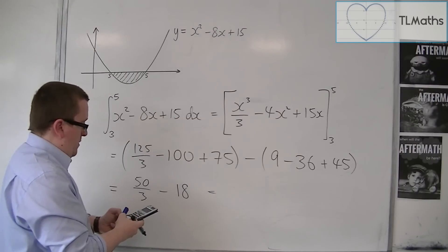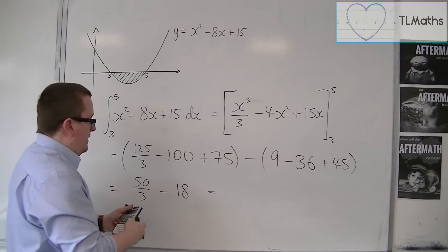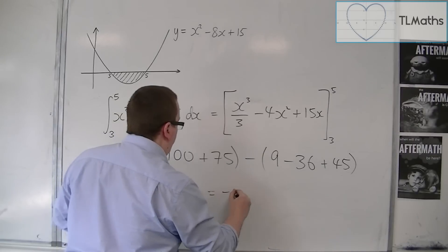So 50 over 3, take away 18, gets us minus 4 thirds.